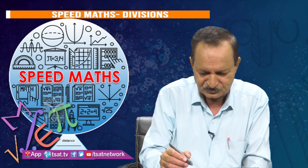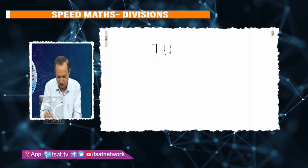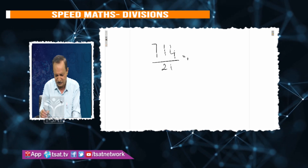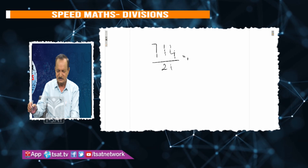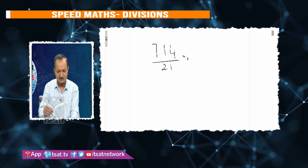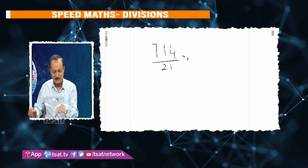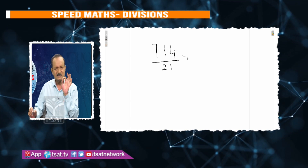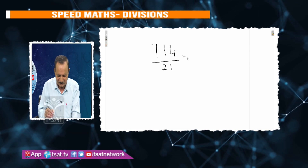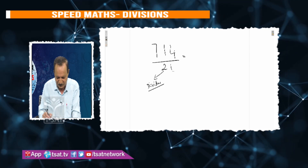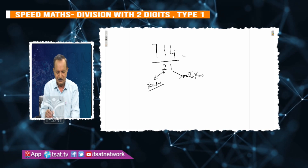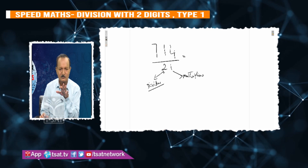Suppose you take any number: 714 divided by 21. For this, we use the second table — the 2-table. The pattern is: 2 divided, 1 multiplied, 2 divided.